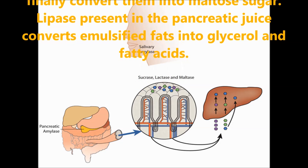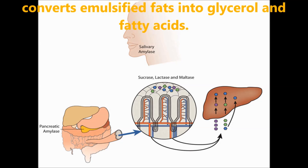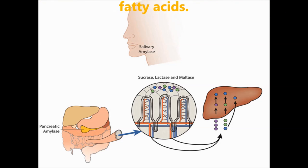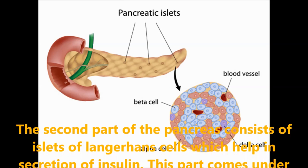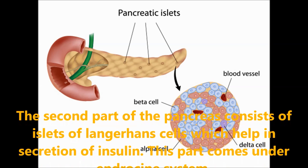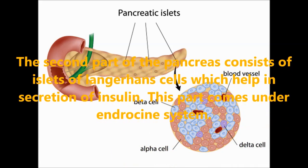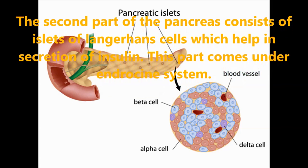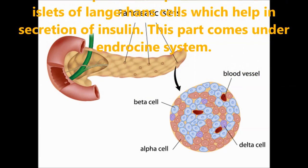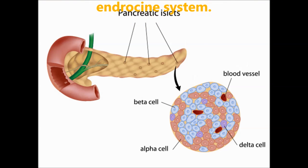The lipase present in pancreatic juice converts emulsified fats into glycerol and fatty acids. The second part of the pancreas consists of islets of Langerhans cells which help in the secretion of insulin — this part comes under the endocrine system. After all these processes are completed, the food enters into the small intestine.